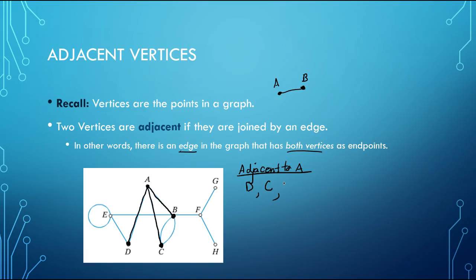So it is directly connected to D, C, and B. We can't get to any of the other vertices without traveling another edge. So they're not adjacent. Think of them as they're the neighbors of A.